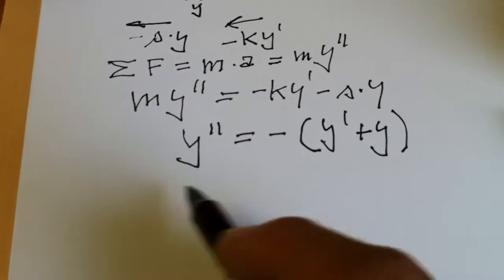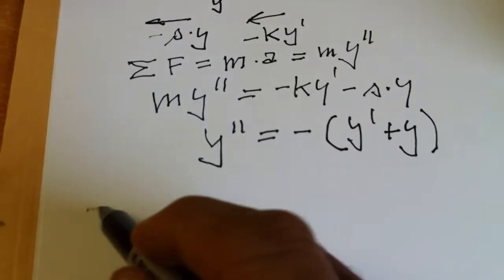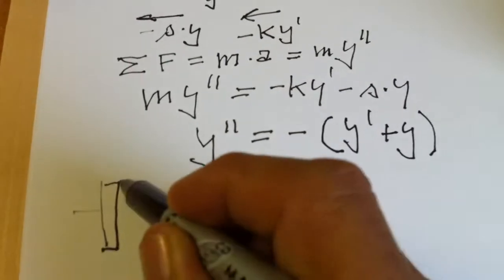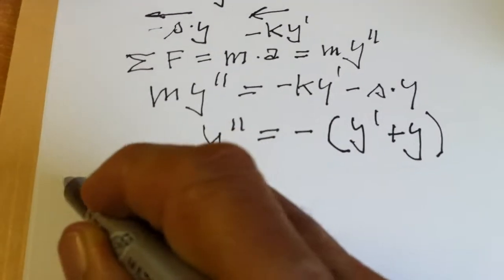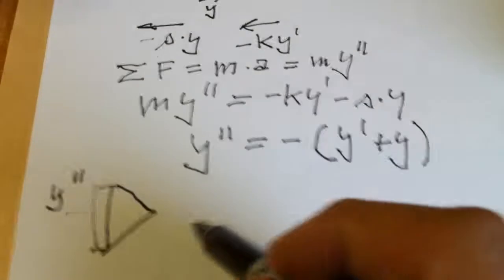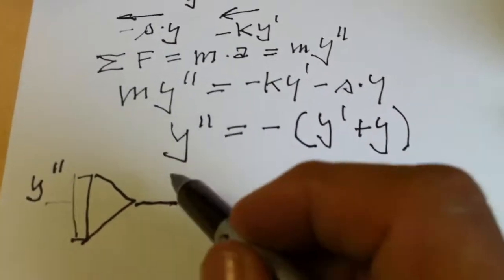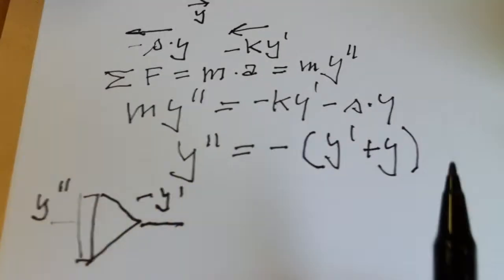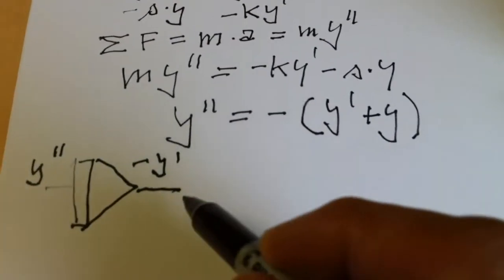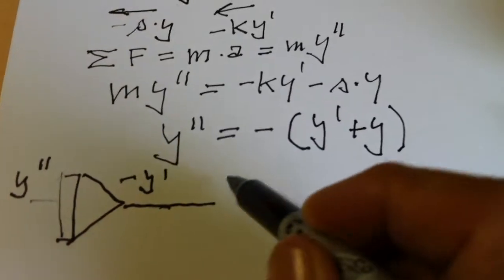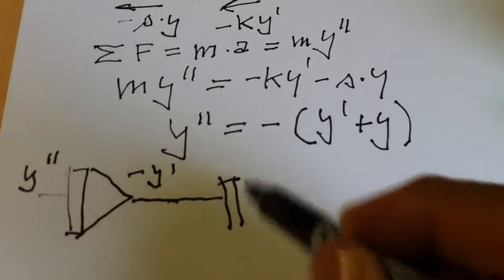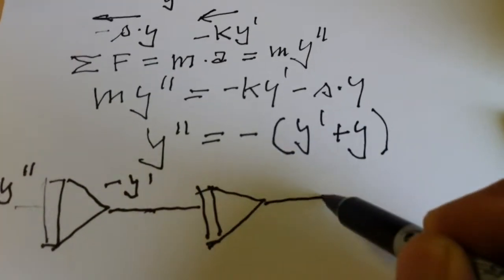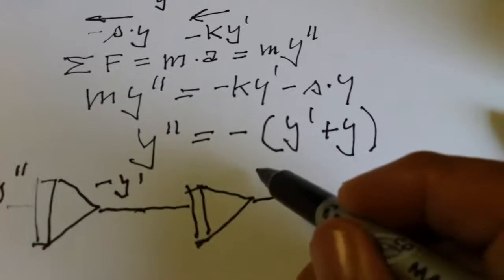Let's start with Y second and assume we know Y second. We will feed this one into an integrator and as integrator makes also an inversion of sign, the result is minus Y prime. We will integrate the second time and the result of the integration of minus Y prime is Y.